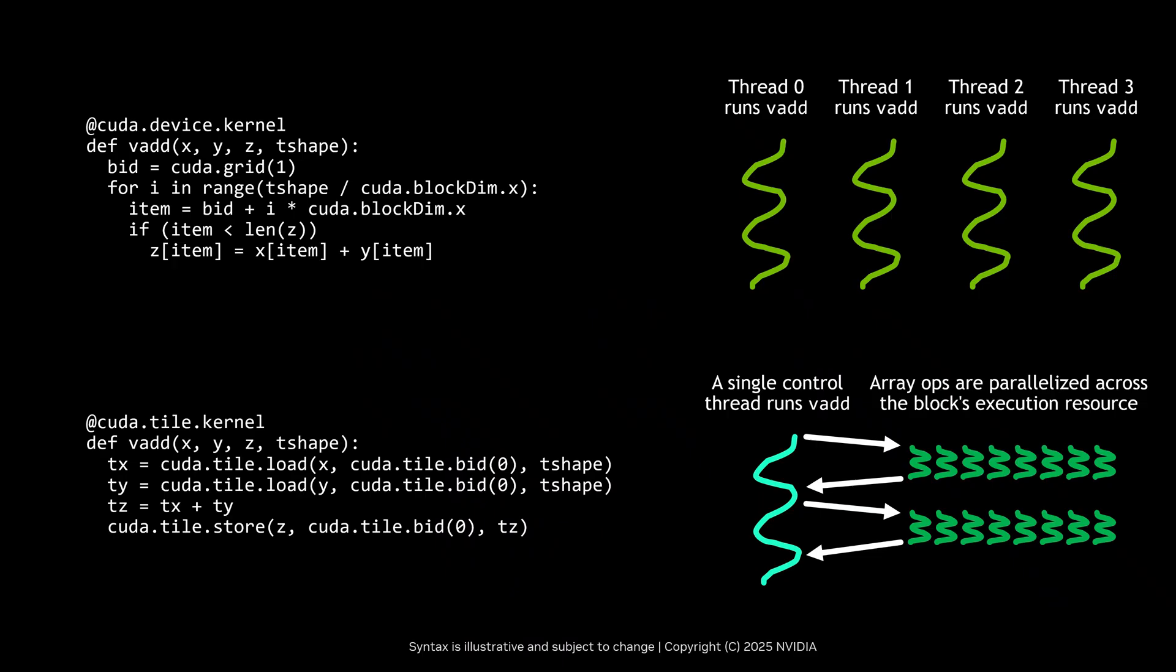Let's look at an example. When running a SIMT kernel, each thread within a block will execute the kernel. But a tile kernel is run by just a single thread per block. Within a tile kernel, we create tiles, which are a special type of local array that you can perform array operations on. Those array operations are sequential with respect to the control thread, but they may be parallelized under the hood by the system using the block's threads and other execution resources.